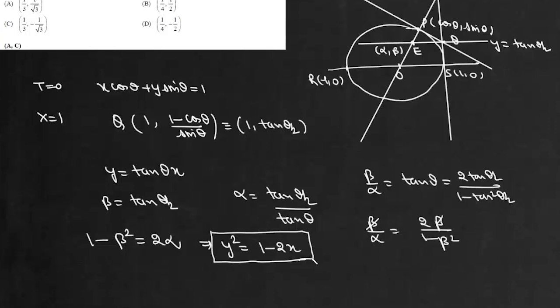Now it says which of the four points will lie on this parabola. Now we look at this point A, its coordinate is (1/3, 1/√3). So if we put y as 1/√3, it will be this 1/3 and 1 - 2/3. It satisfies this equation. So this option A is correct.